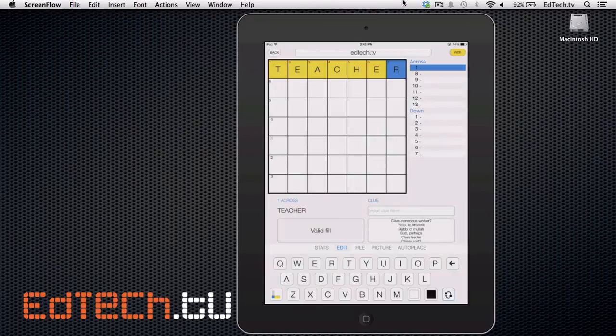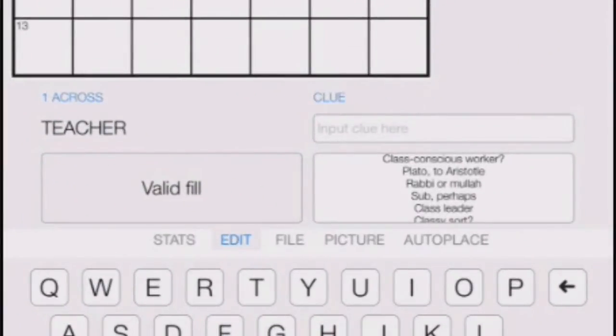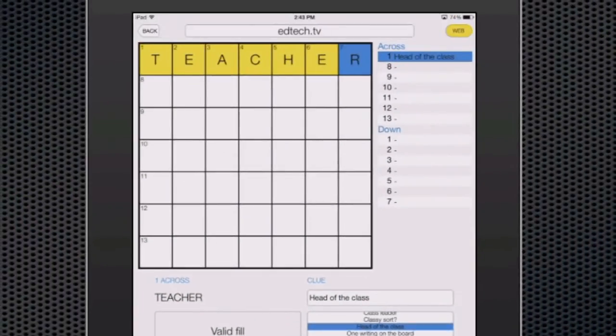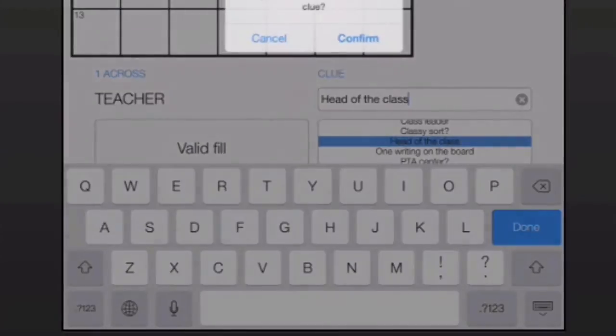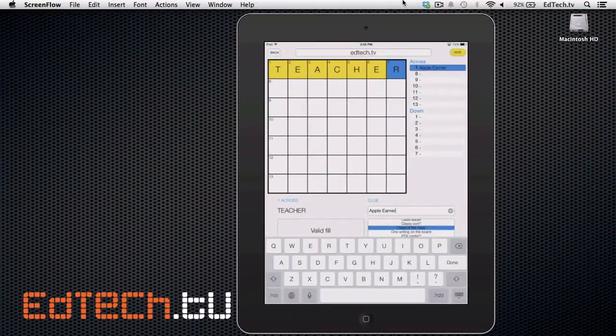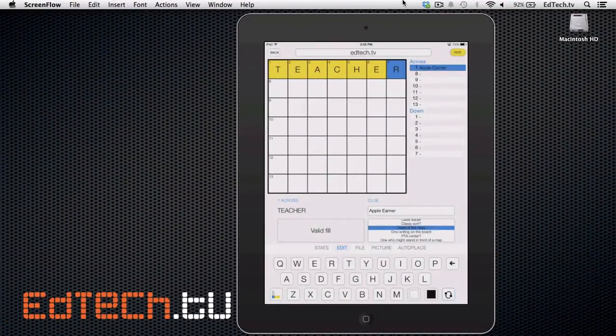And then the cool thing is that on the right-hand side, it gives you a bunch of clues. So if I wanted to choose any of these, for example, if I want to choose head of the class, I could just tap on that, and then as we move up back to the clue on the top right, it says head of the class. But then maybe I'll decide I don't want to do that. So I'll move back down to the clue, and I'll tap here, and I do want to clear it. And maybe I'll say instead, and you can see that my clue has changed there on the top right. So that's how you create any word that you want there. You can just fill it in directly.